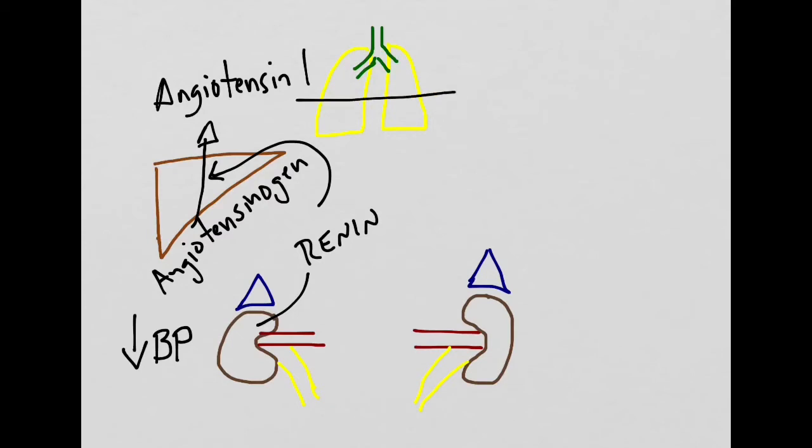The next step is angiotensin-1 will interact with ACE, which is angiotensin-converting enzyme. This occurs in the lungs, and angiotensin-1 will be converted to angiotensin-2.